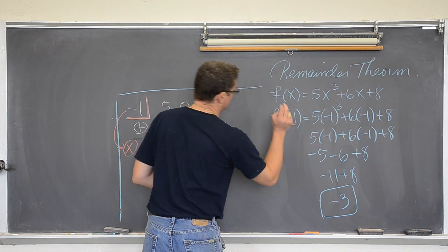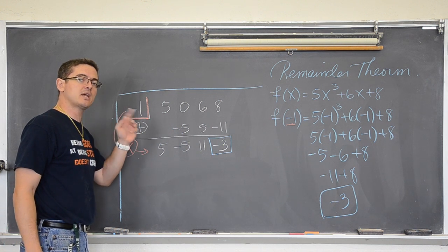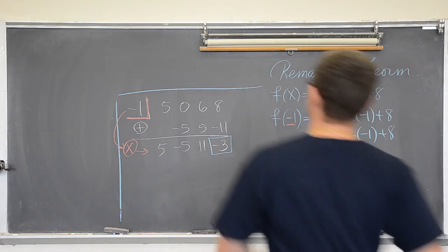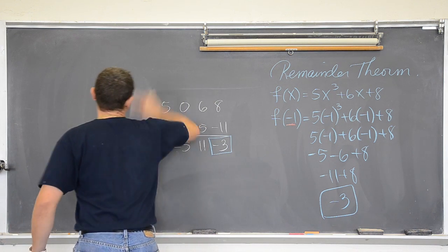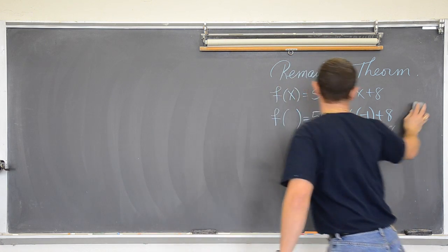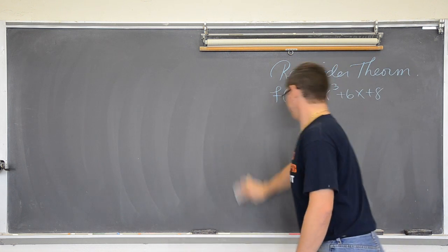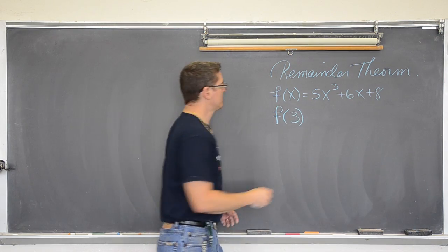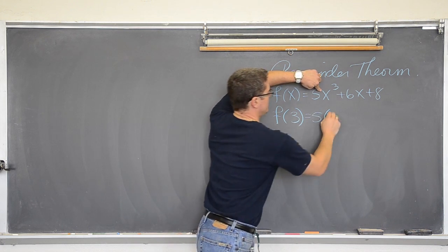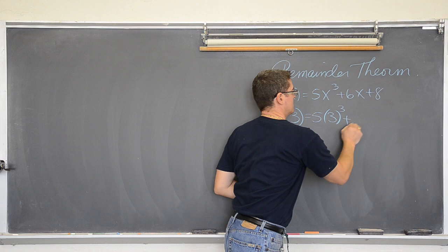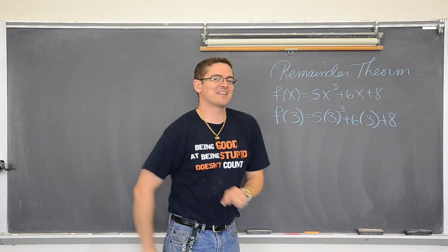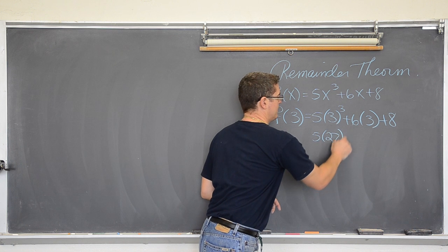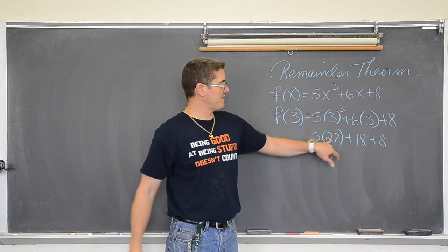Also note that if I say, what is f of negative one? I used negative one. I might change the number here. Let's just do that again. Let's say I want f of three. Well, that is five times three cubed plus six times three plus eight. Let's see if I need to edit this video out because I can't do this in my head. Three cubed. Three, nine, twenty-seven. So five times twenty-seven plus three times six is eighteen plus eight. Well, what is five times twenty-seven?